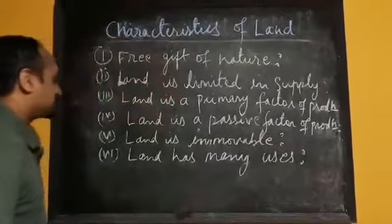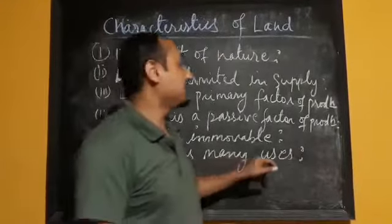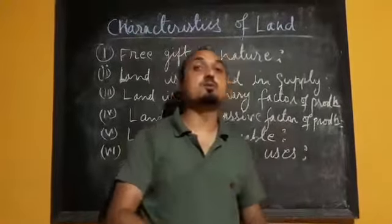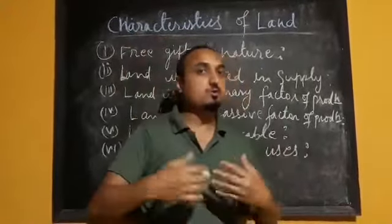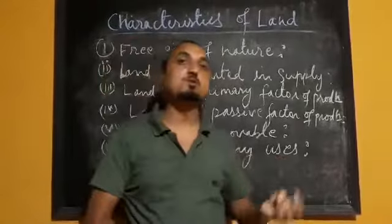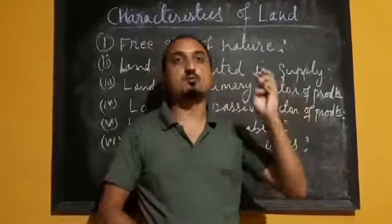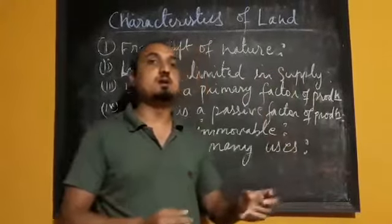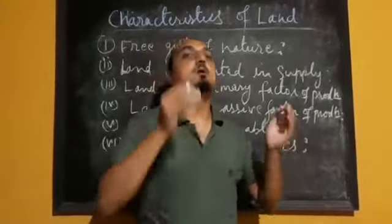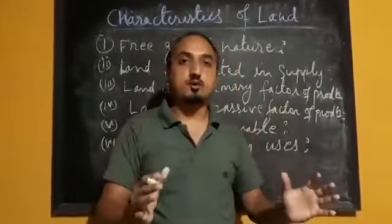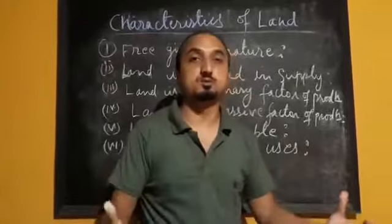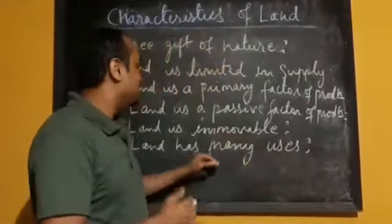The next important characteristic of land is that land has many uses — land can be used for several purposes. Land can be used for the production of agricultural items, food items, vegetables, and fruits. Similarly, that land can be used for the construction of roads, railways, highways, buildings, and factories. That's why land has many uses, and this is also one of the important characteristics of land.